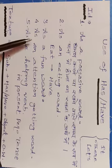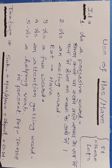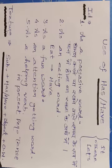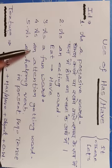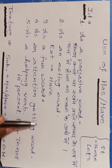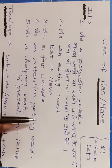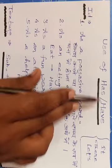Next, fourth number: as an attention-getting word. Have ka use aap attention lene ya attention prapt karne wale word ke roop mein bhi karte hain. Jaise: Chaliye is picture ko dekhte hain — Let's have a look at this picture. Chaliye is footage ko dekhte hain — Let's have a look at this footage. Chaliye Bharat ke nakshe ko dekhiye — Let's have a look at the map of India. Let's have a clip of this movie, let's have a clip of this footage.